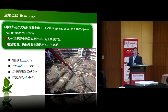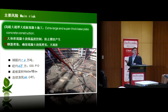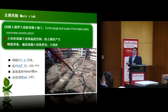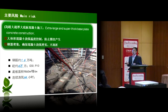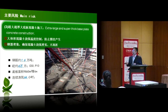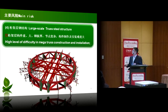Another risk is the extra-large super-thick base plate concrete construction. The thickness is six meters and the total pour is 60,000 cubic meters. The biggest risks are: first, the internal-external temperature differential control, because if temperature is not well controlled, cracks will be generated; and second, since the reinforced concrete is very dense, achieving a firm, well-compacted concrete pour is another major risk.